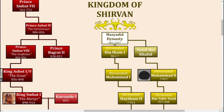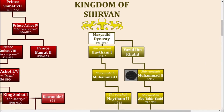Shirvan was founded in 861 by Haifim the First, who descended from the Maziyadid dynasty that actually governed the region of Armenia for many years. He declared full independence and sovereignty from the Abbasid Caliphate. All the rulers of Shirvan adopted the title Shirvan Shah, much like the title of Shahan Shah mentioned in the previous video.